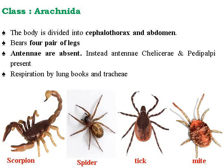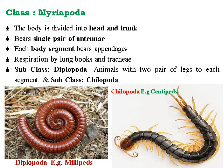Class Arachnida — body is divided into cephalothorax and abdomen, bearing four pairs of legs. Antennae are absent; instead there are chelicerae and pedipalpi. Respiration is by book lungs and the tracheal system. Major examples are scorpion, spider, ticks, and mites. Class Myriapoda — body divided into head and trunk, bearing a single pair of antennae on the head. Each body segment bears individual appendages like legs. Subclass Diplopoda has two pairs of legs per segment — example: millipedes. Subclass Chilopoda — example: centipedes, which are very common during the rainy season.